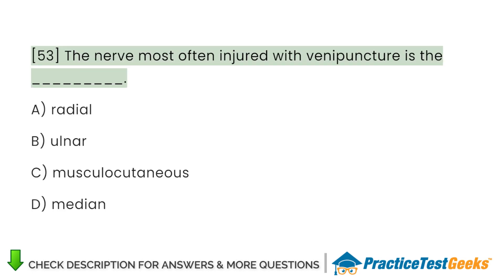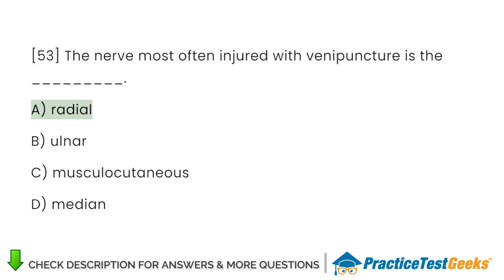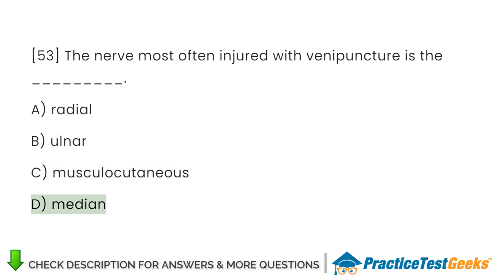The nerve most often injured with venipuncture is the A. Radial. B. Ulnar. C. Musculocutaneous. D. Median.